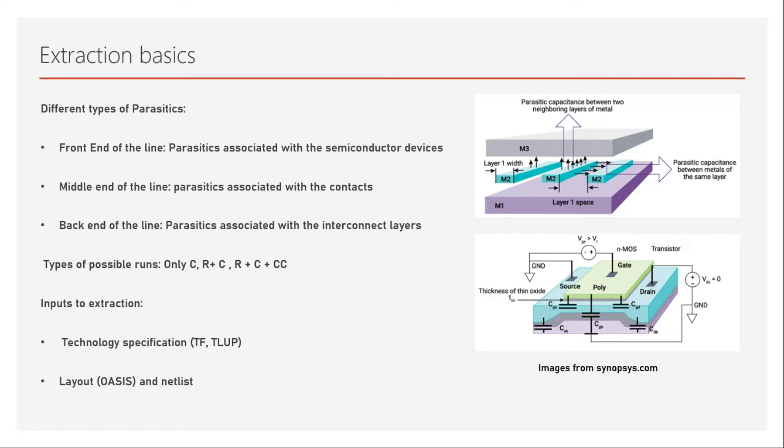The first is Front End of the Line (FEOL) parasitics, which are associated with semiconductor devices or transistors — and in DRAM, capacitors and other devices as well. These capacitances and resistances are different because there are multiple layer types such as diffusion, oxide, poly, and others, so they are extracted differently.